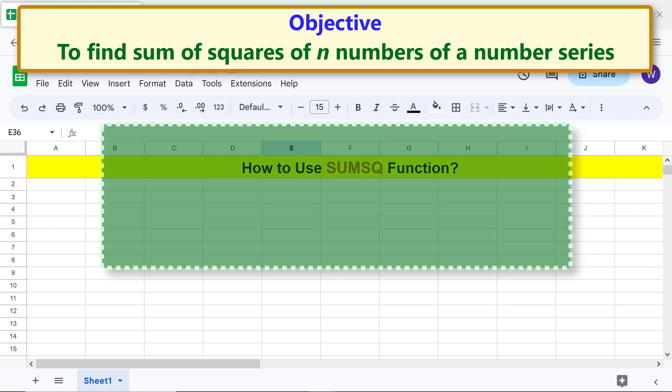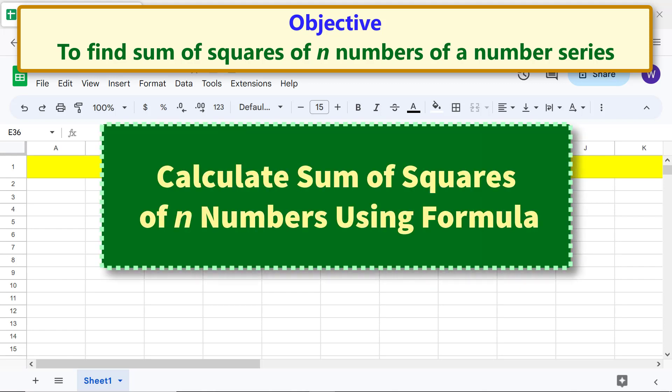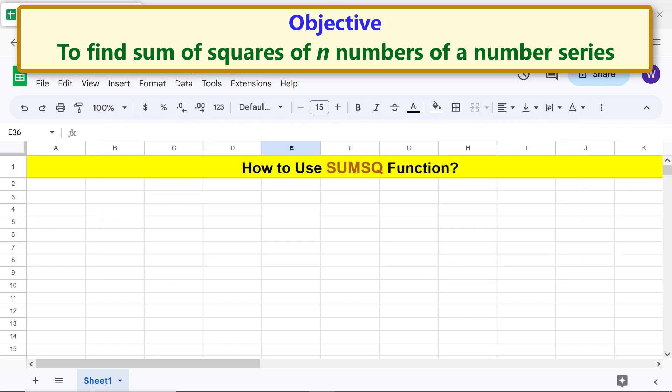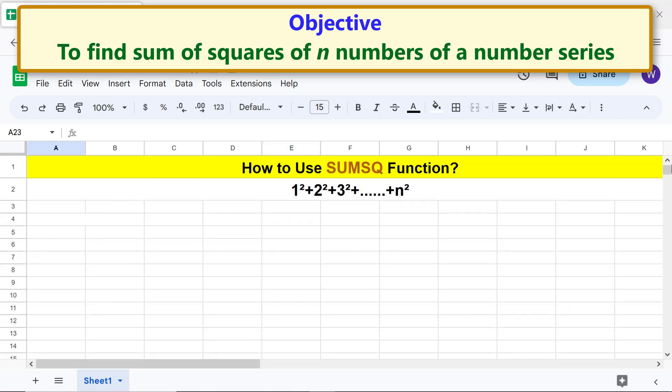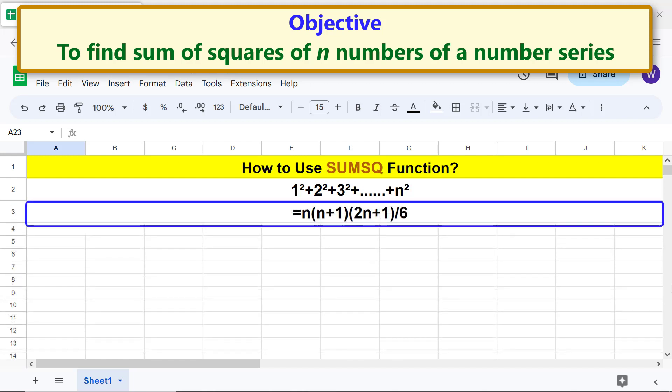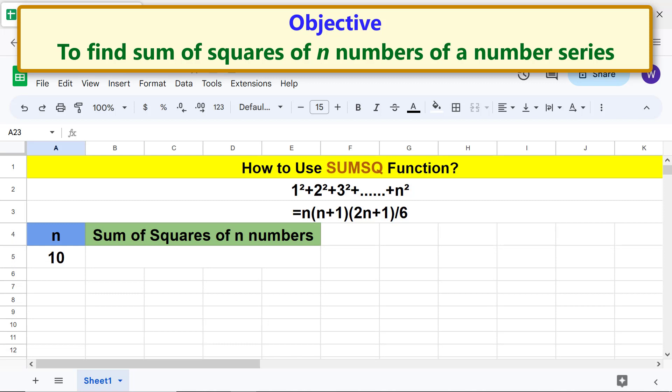Calculate sum of squares of n numbers using formula. Here's a number series. The formula to calculate the sum of squares of n numbers is 1² + 2² + 3² + ... = n(n+1)(2n+1)/6. Let n equals 10.